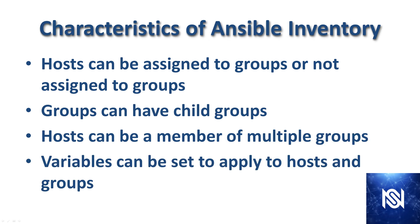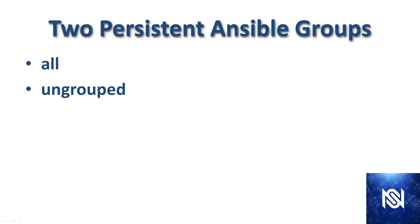Here we have some of the basic characteristics of Ansible Inventory. Hosts can either be assigned to groups or not assigned to groups. Groups can have child groups, hosts can be members of multiple groups, and variables can be set to apply to the hosts and groups. There are two persistent Ansible groups that are going to be there whether or not you define them: the first is 'all', which is all of the devices, and then there's also 'ungrouped' for devices not specifically put into a group.